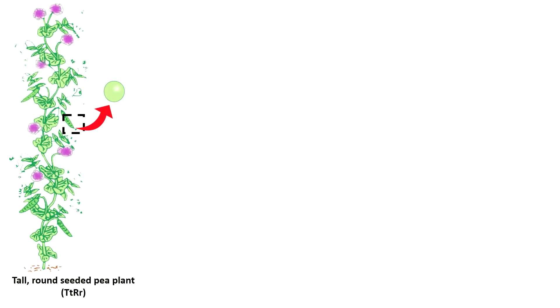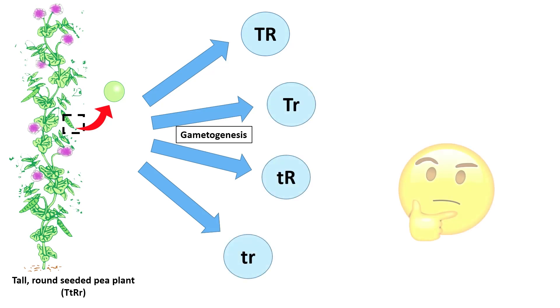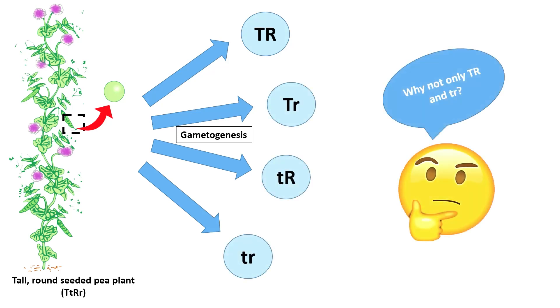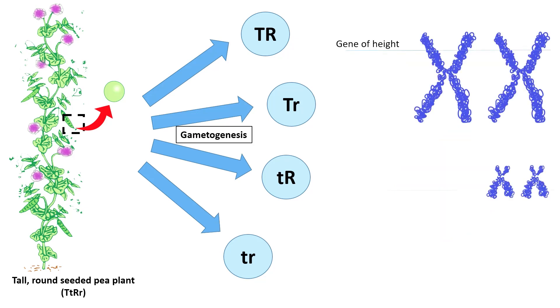Have you ever wondered why this individual is able to produce four types of gametes? This is because the two genes are located on different chromosomes.